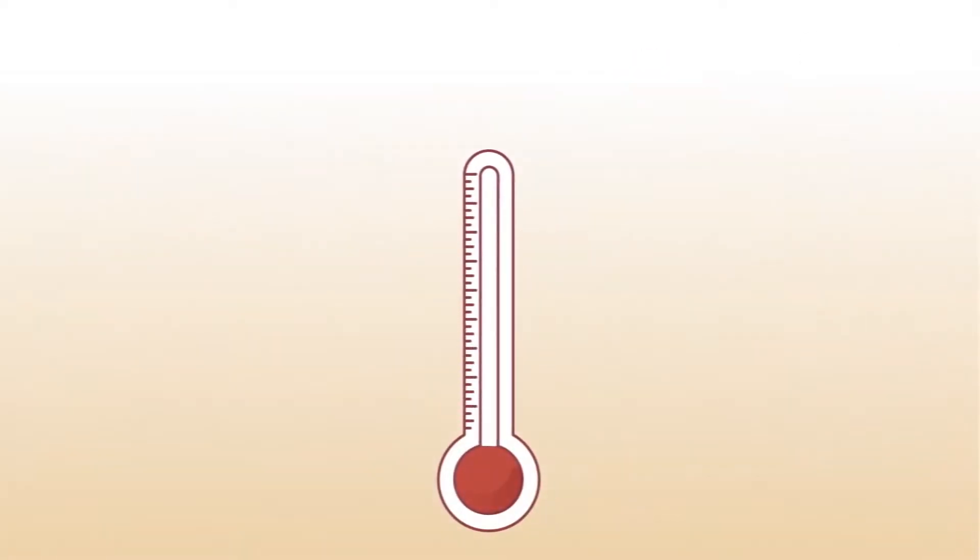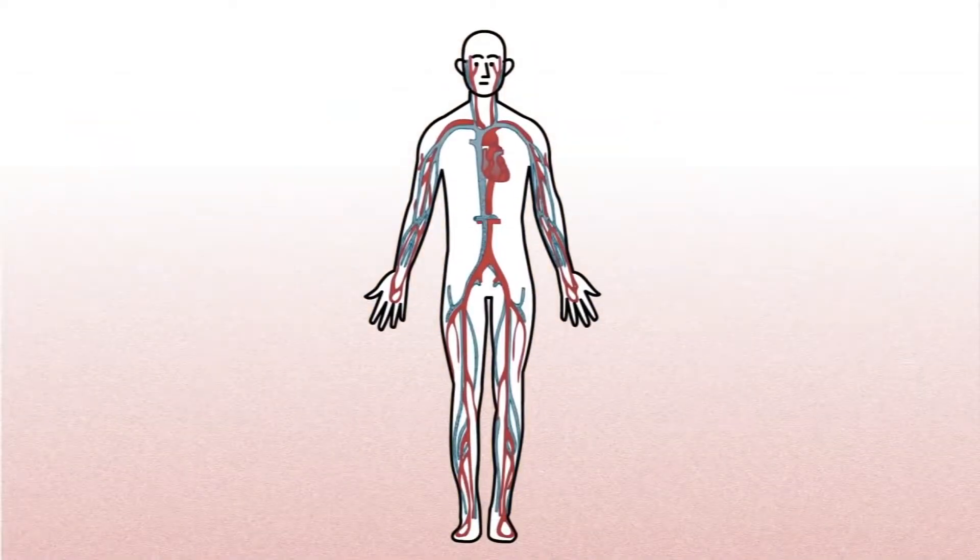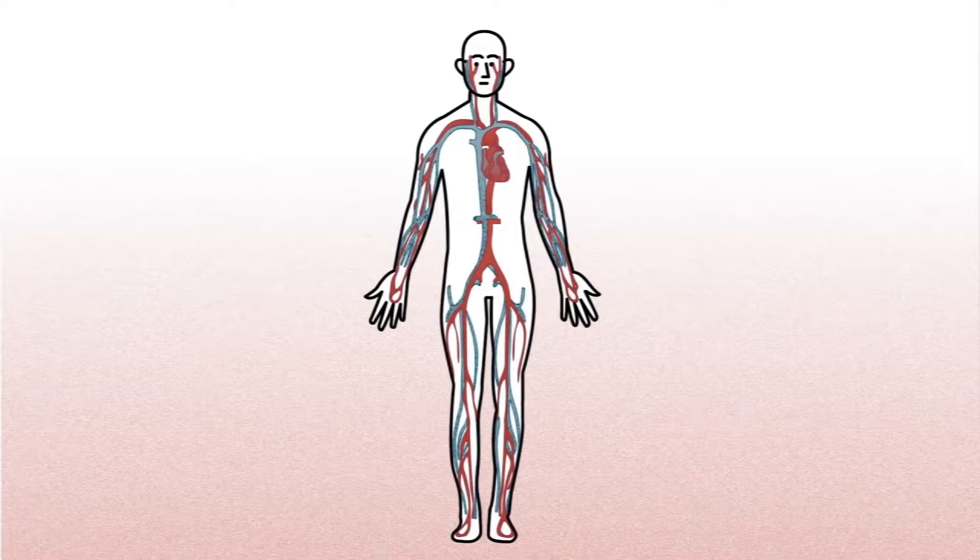As muscles work, they also use energy and produce an important byproduct: heat. In fact, muscle provides about 85% of your warmth, which the heart and blood vessels then spread evenly across the body via the blood. Without that, we couldn't maintain the temperature necessary for our survival.